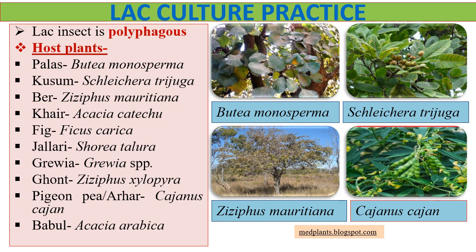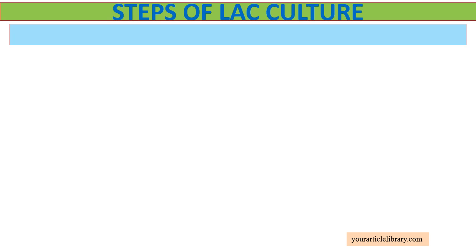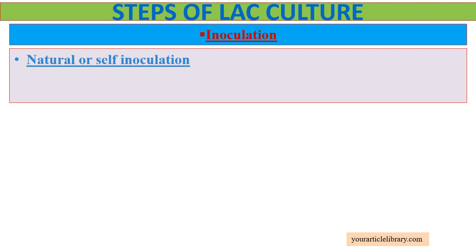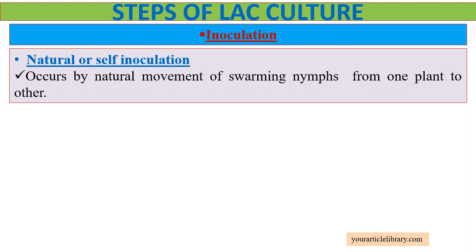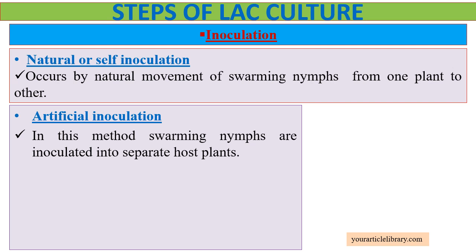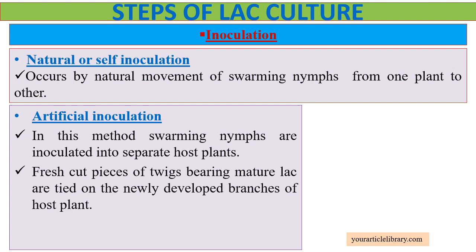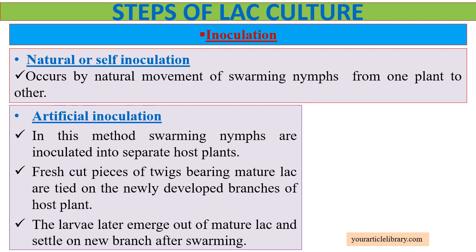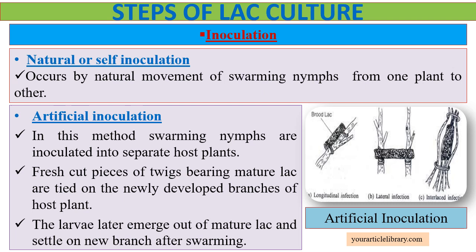The first step of lac culture is inoculation. This is of two types. First, natural or self-inoculation, which occurs by natural movement of swarming nymphs from one plant to another. The other is artificial inoculation, where swarming nymphs are inoculated into separate host plants. This method is initiated by pruning of host plants. Fresh cut pieces of twigs bearing mature lac are tied on the newly developed branches of the host plant. The larvae later emerge out of mature lac and settle on the new branch after swarming.